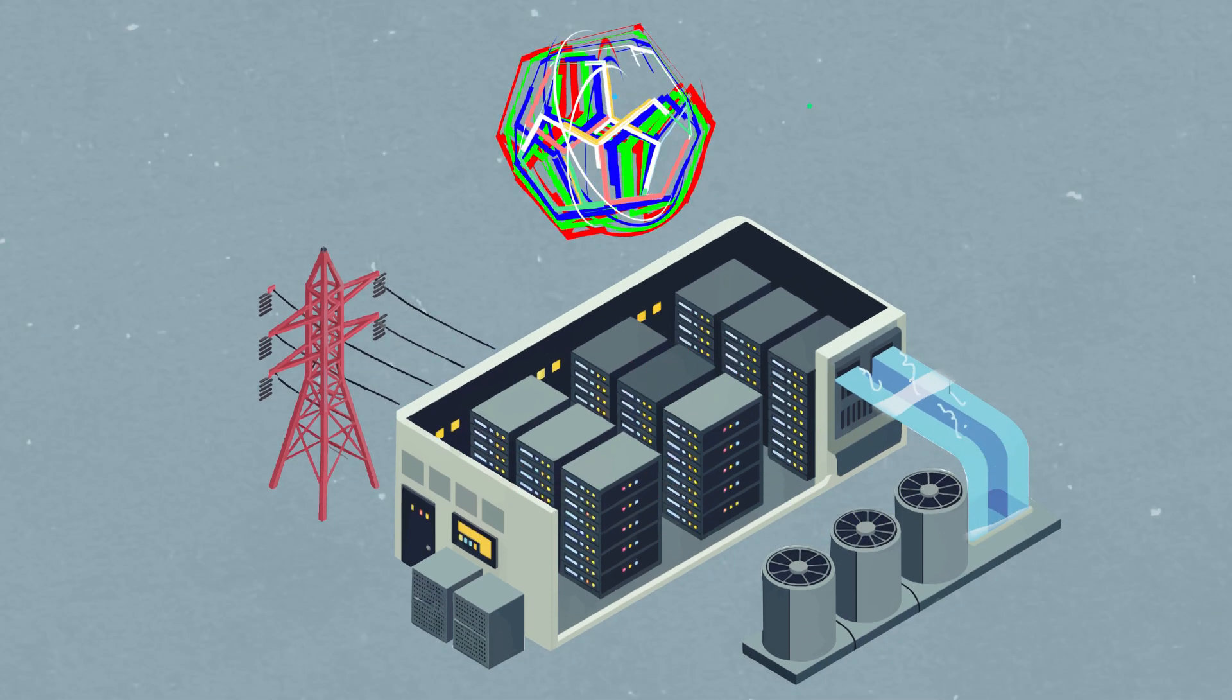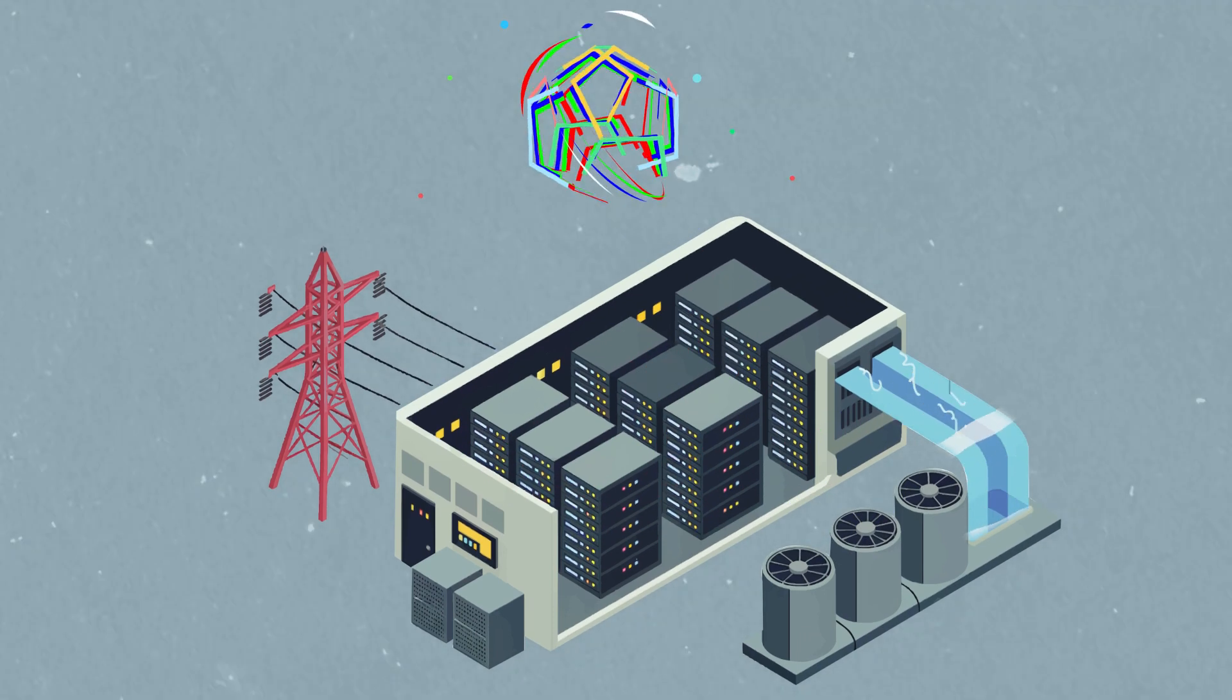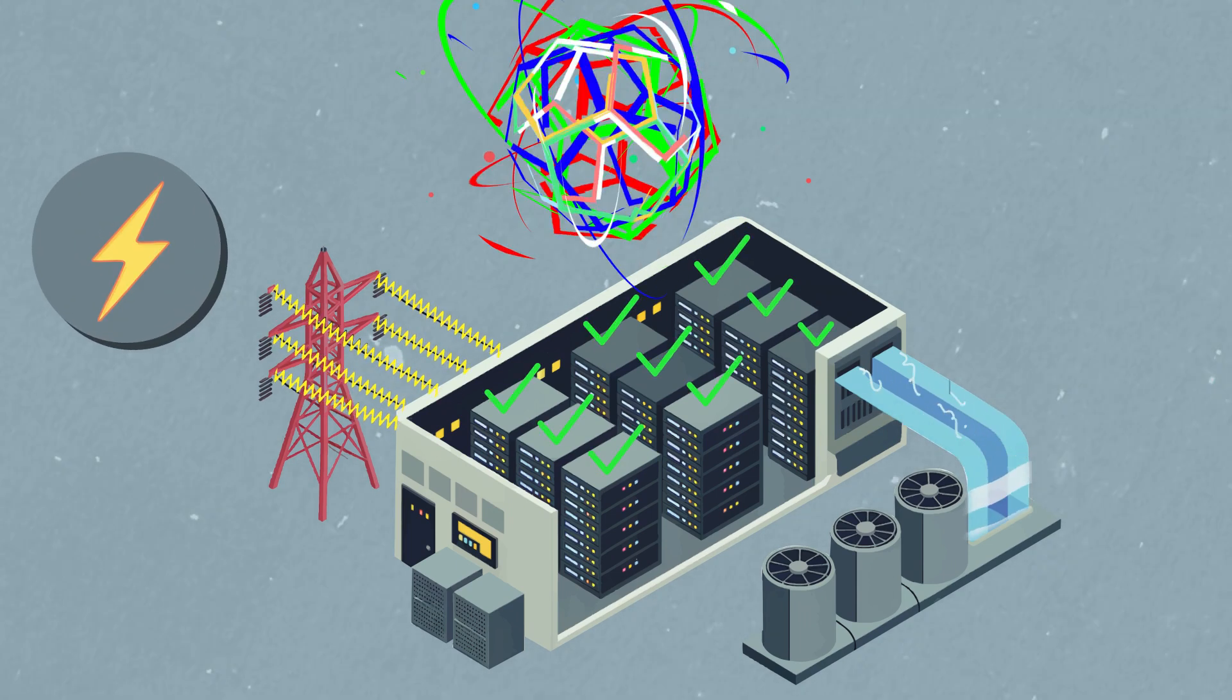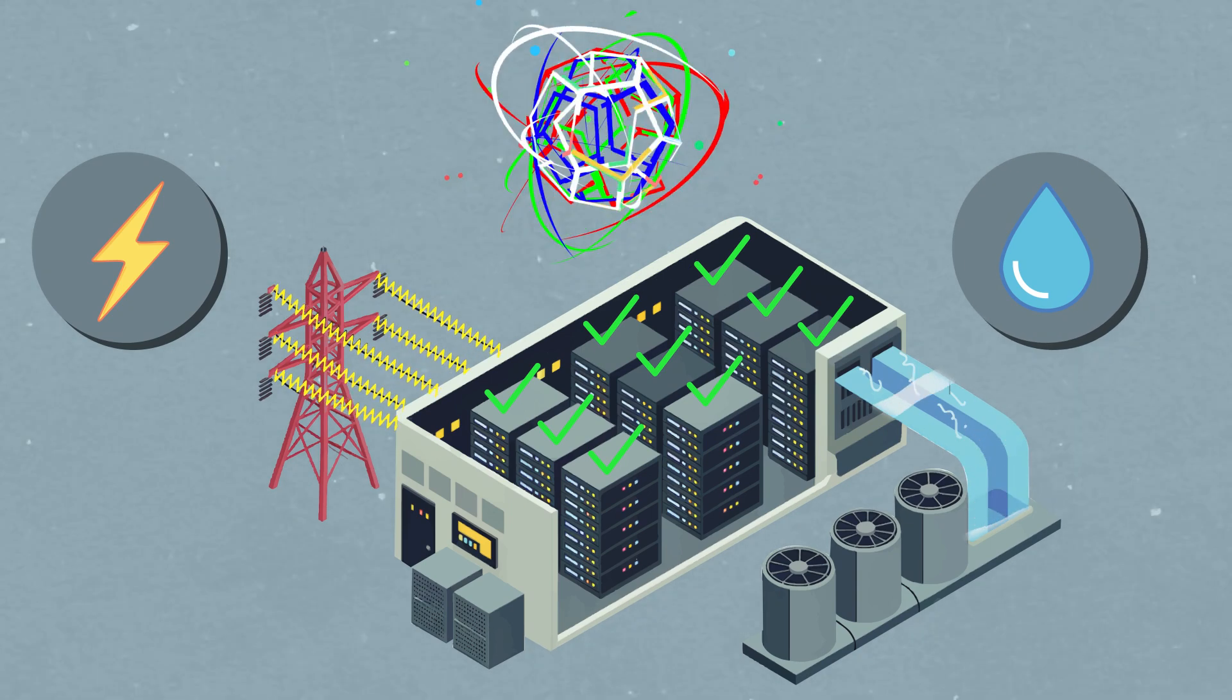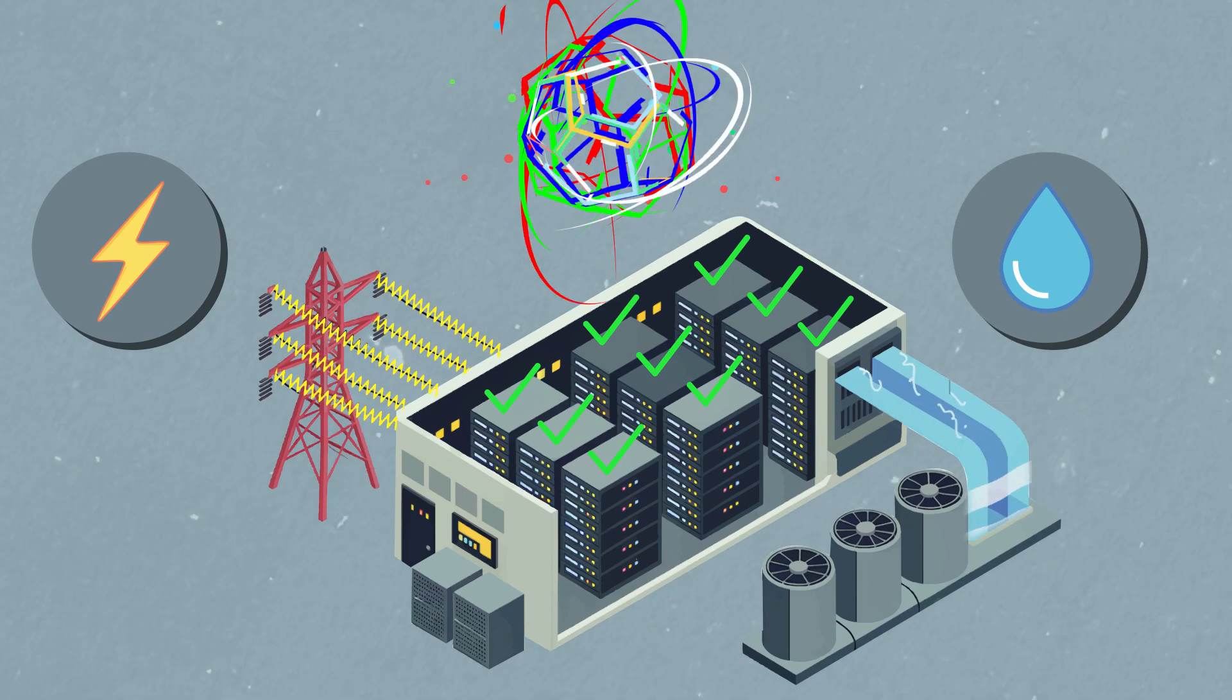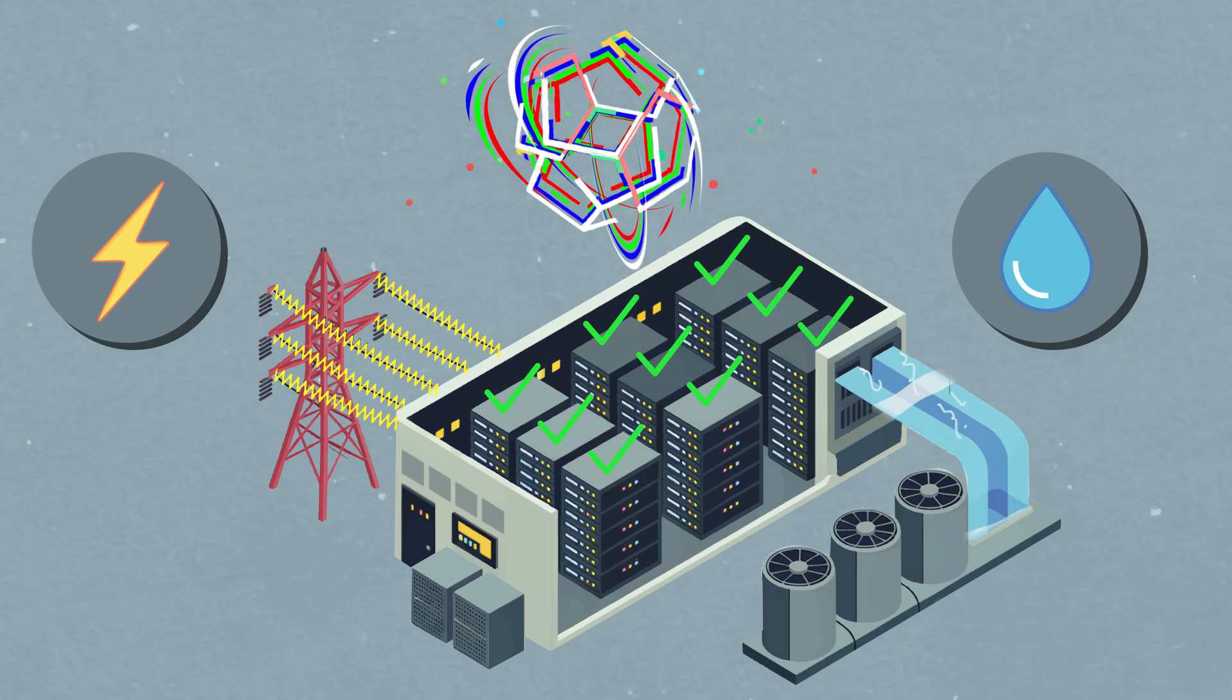Generative AI doesn't just run on ideas, it runs on energy. Every time we use AI, electricity is used to power the AI computers and water is used to cool them. That's why it's important to think about how using AI affects the environment, just like we do with other technologies.